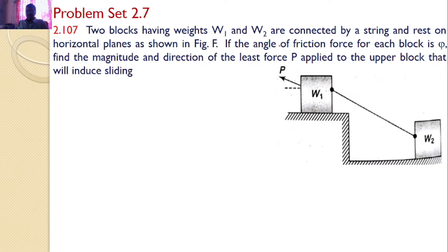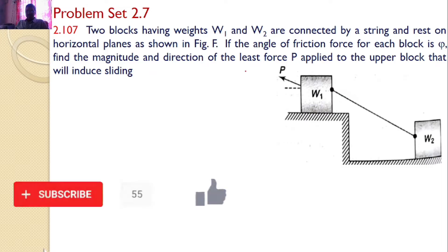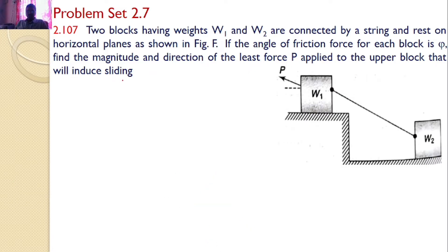Two blocks having weights W1 and W2 are connected by a string and rest on a horizontal plane, as shown. If the angle of friction for each block is 5°, find the magnitude and direction of the least force P applied to the upper block that will induce sliding. That means there are 2 blocks attached with a string, and we need to find how much force P we need to apply so that sliding will induce.